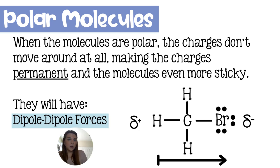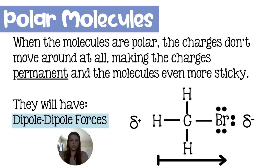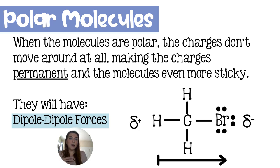We also have polar molecules, which are polar all the time because of the way that they're built. Their internal structure is going to have electrons drawn from one area over to another. In this case, we have bromomethane, and all of the electrons are being drawn away from the hydrogens, away from the carbon, and into the bromine, which gives the bromine a partial negative charge, leaving the opposite end of the molecule to be partially positive.